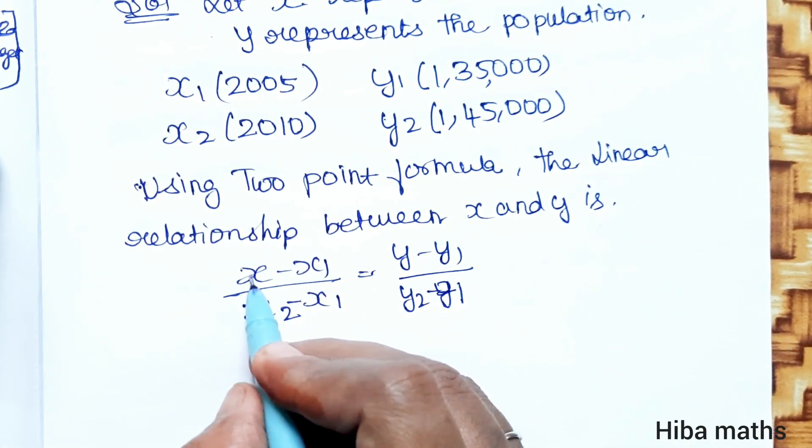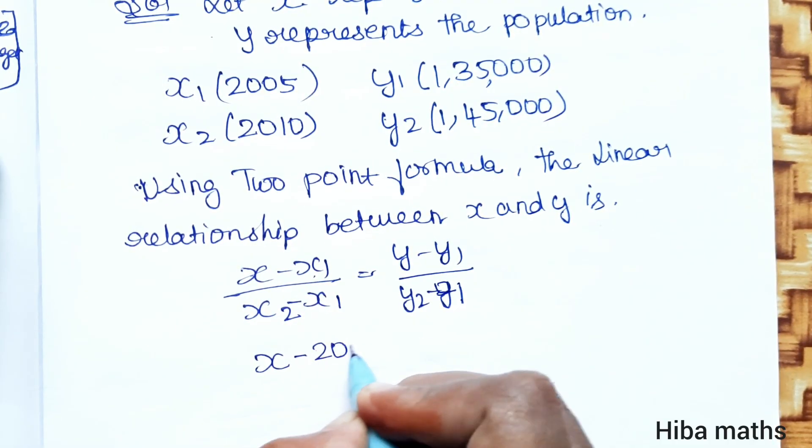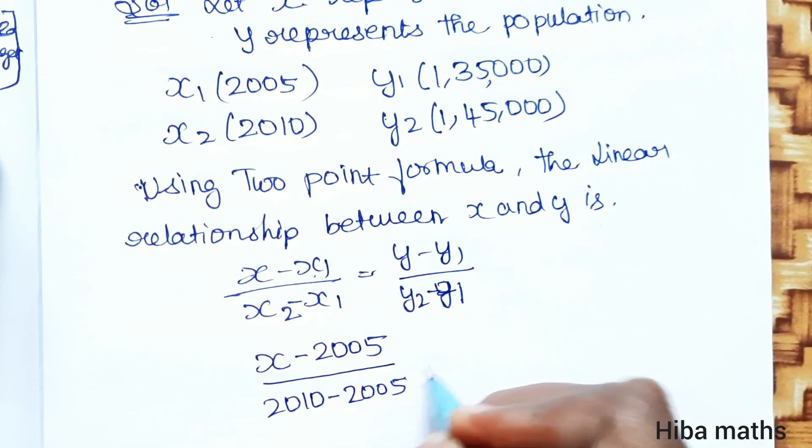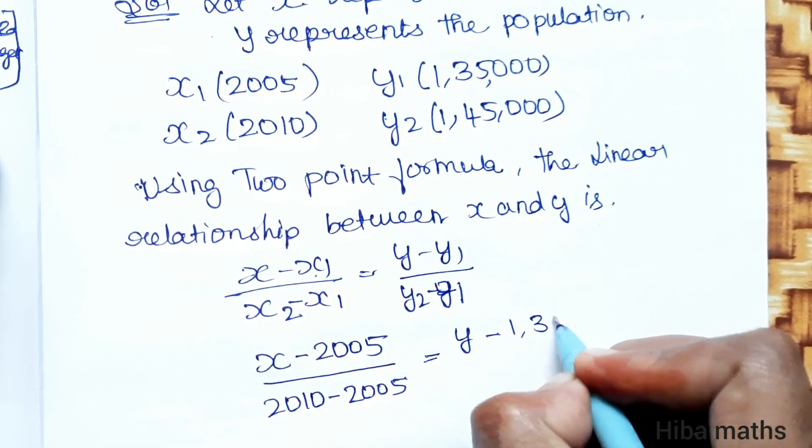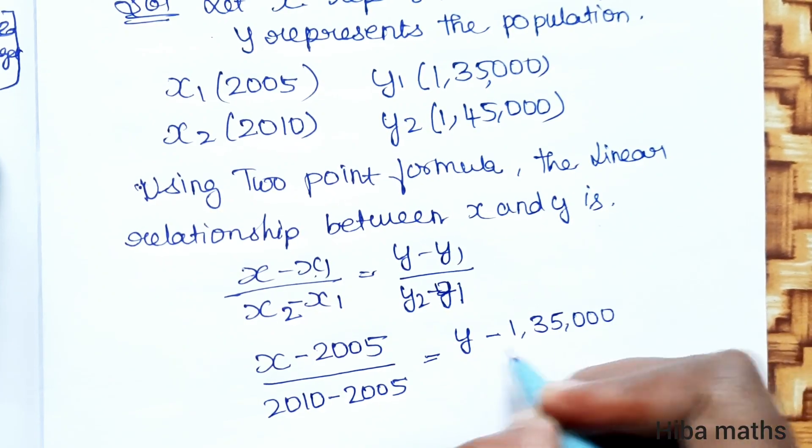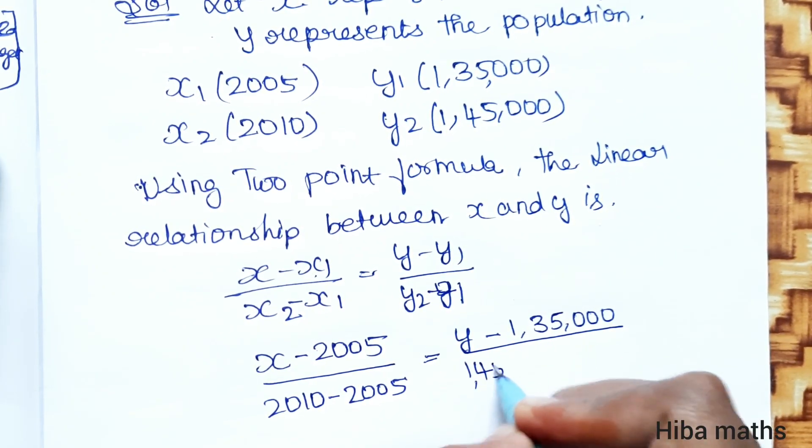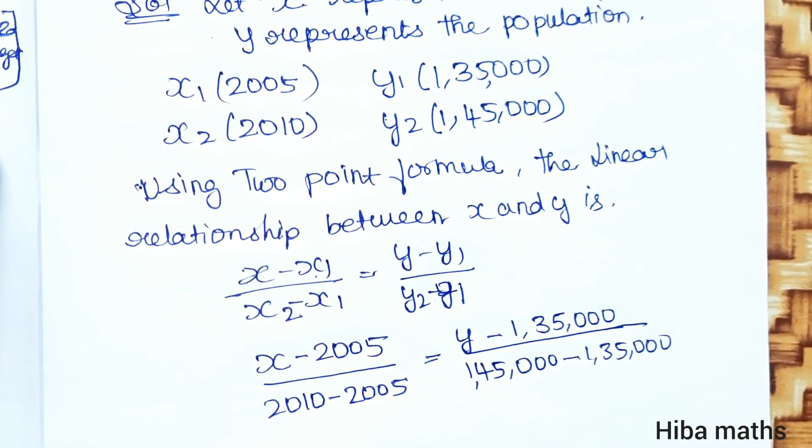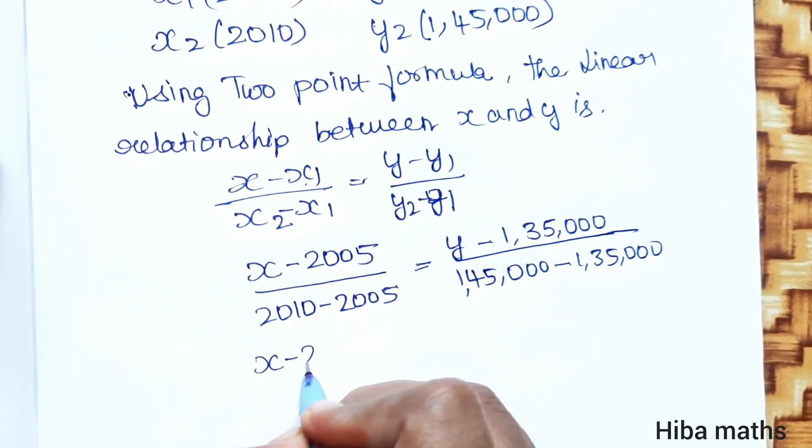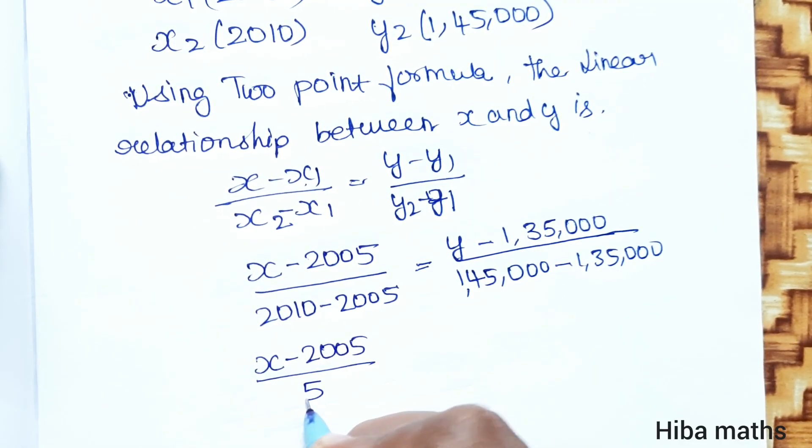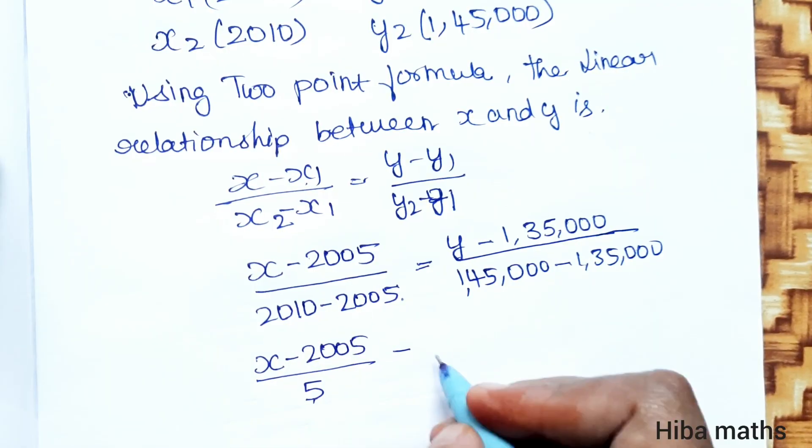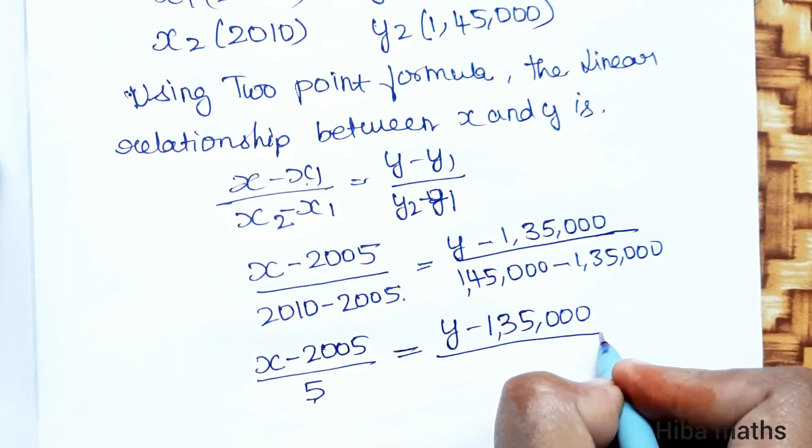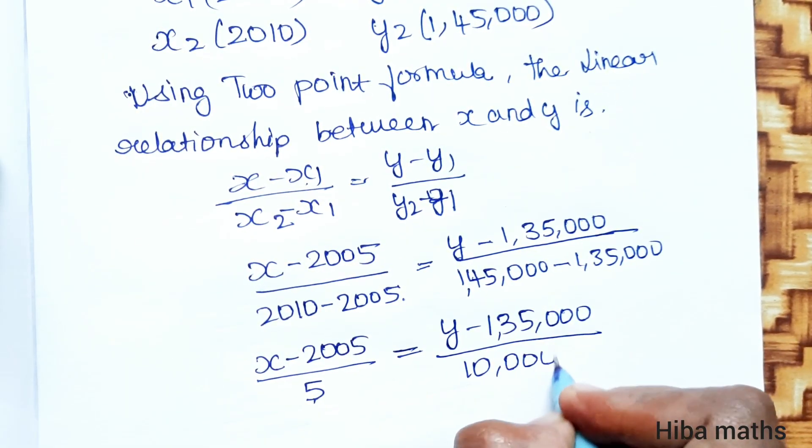So, (x - 2005)/(2010 - 2005) is equal to (y - 1,35,000)/(1,45,000 - 1,35,000). So, (x - 2005)/5 is equal to (y - 1,35,000)/10,000.